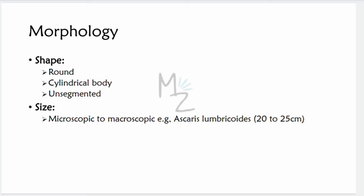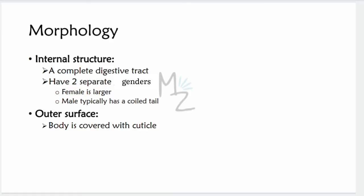Regarding morphology: nematodes are round — hence called roundworms — with a cylindrical, unsegmented body, unlike tapeworms which have segments. Size varies from microscopic to macroscopic; for example, Ascaris lumbricoides measures 20 to 25 centimeters. Internally, nematodes have a complete digestive tract including a mouth and an anus. They have two separate genders; the female is larger than the male, and the male typically has a coiled tail.